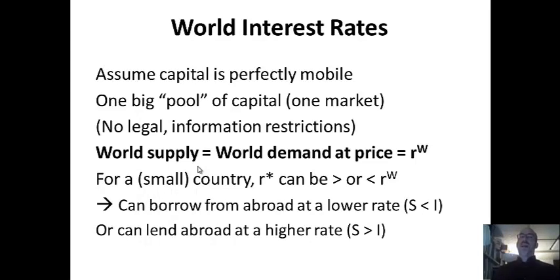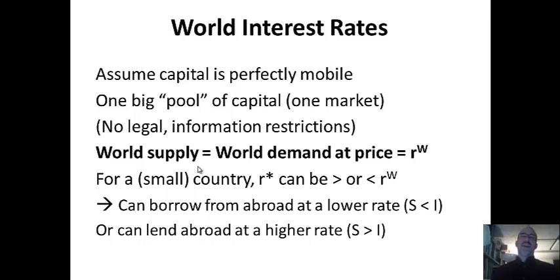We're going to talk about this lending taking place at a certain price: the world interest rate. Assume capital is perfectly mobile, though there are legal and information restrictions. People talk about what's called home bias — people are biased toward investing at home. Most people have savings accounts at local banks and don't have the information or risk tolerance to invest abroad. But we can assume there's one big pool of capital — all world savings and all world investment in one market — and the price is the world interest rate, RW, determined by world supply and demand.